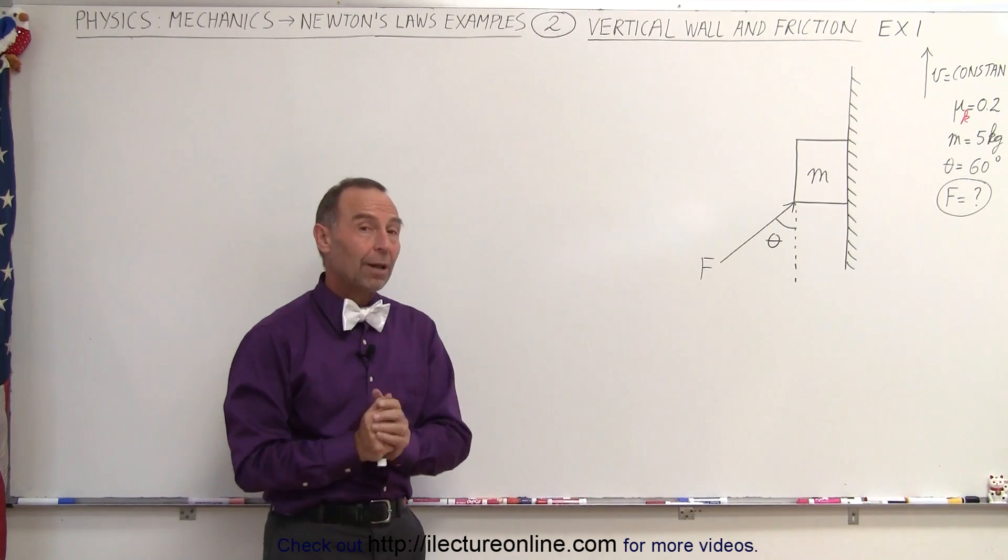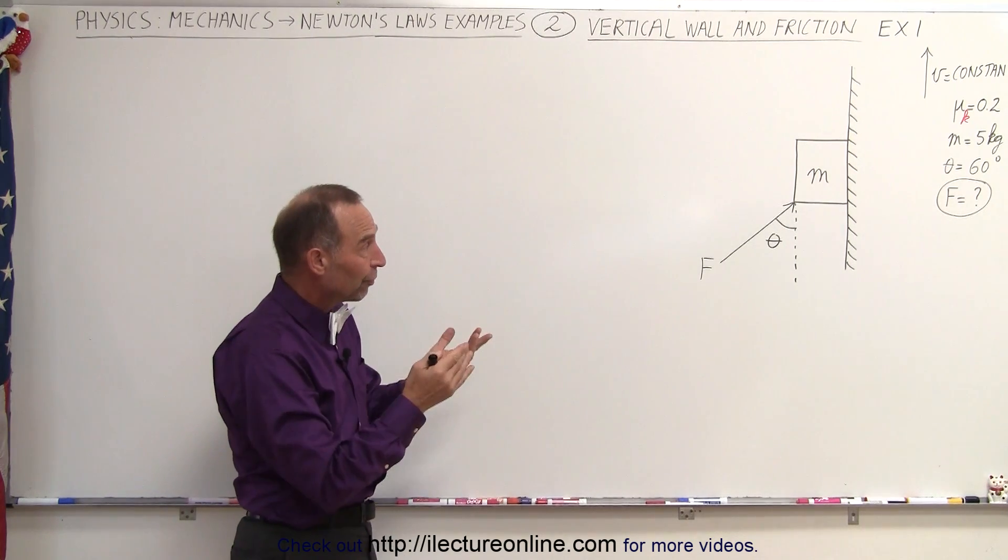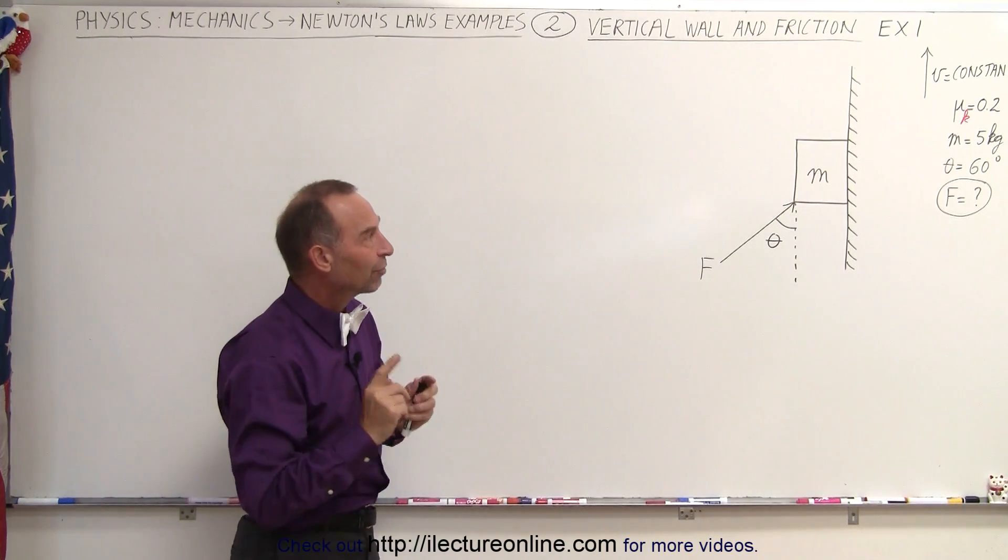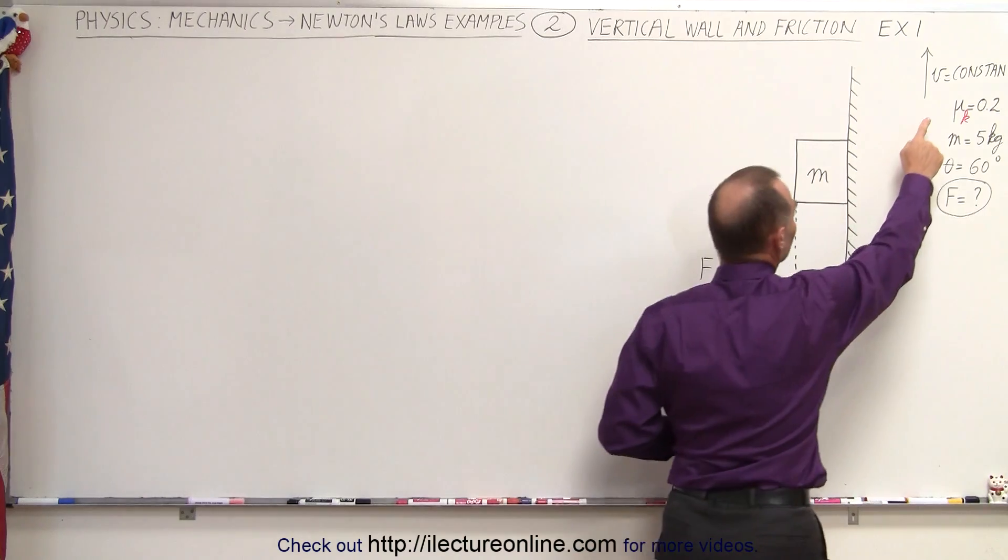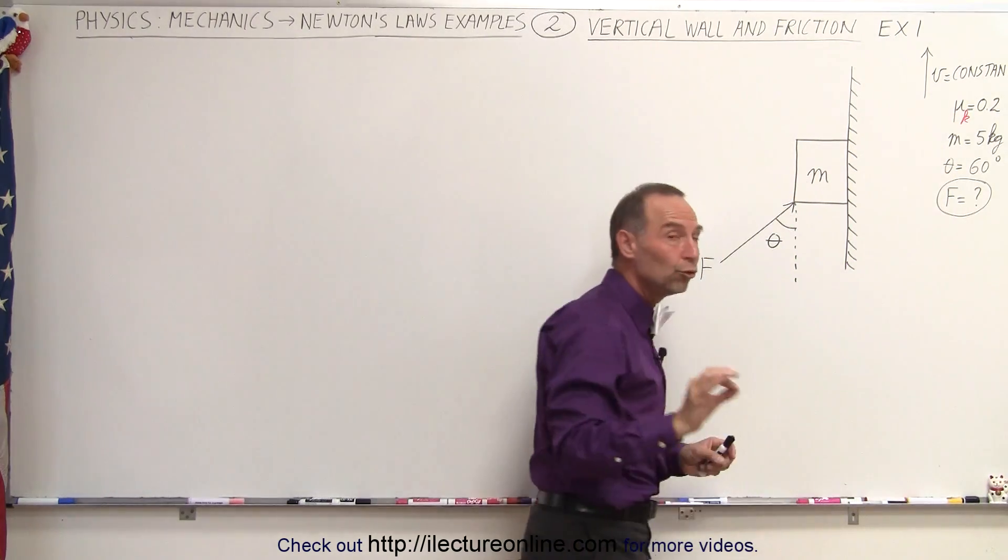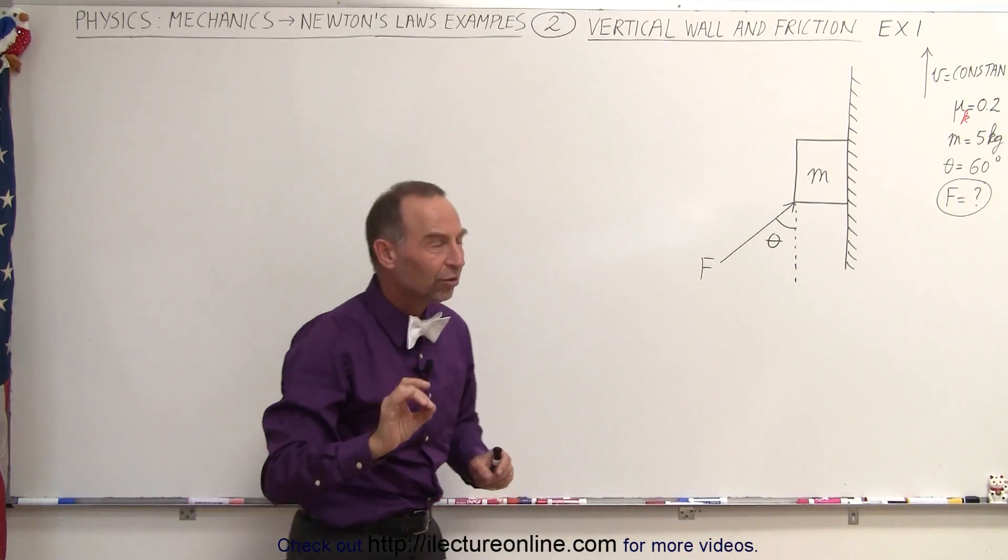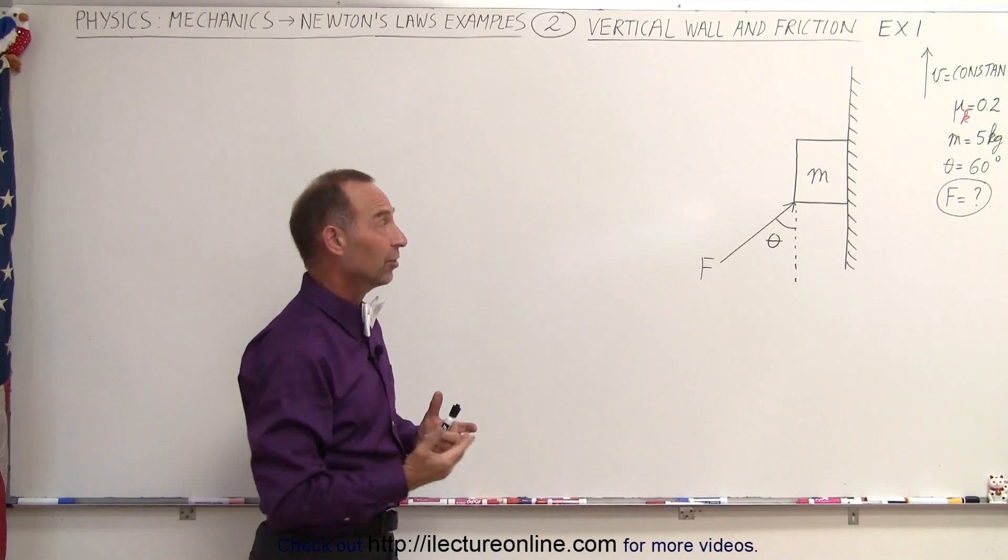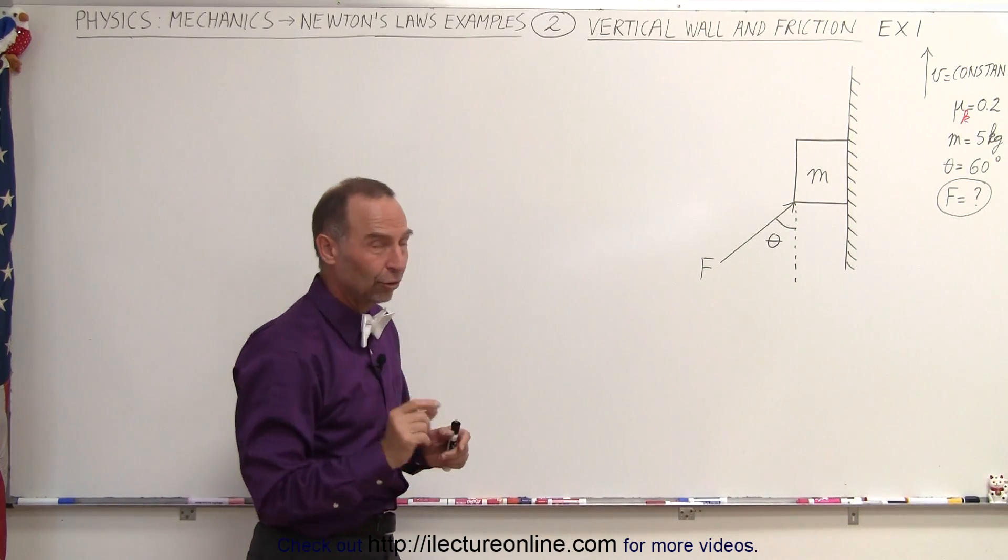The key to doing this problem is twofold. First of all, we have to show all the forces involved in the problem. Secondly, we have to realize that if the velocity is constant, that means there's no acceleration. And when there's no acceleration, there is no net force on the object in any direction, including the vertical direction. So those are the keys.